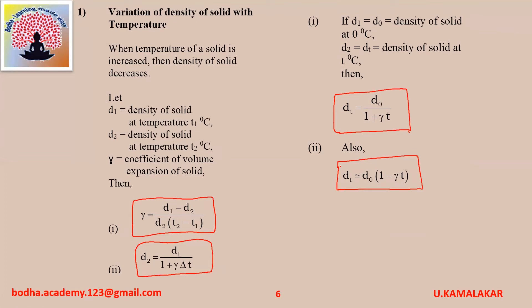Note: the relation D2 approximately equals D0 into (1 minus gamma T) is not commonly used because it is only an approximate relation.